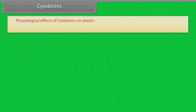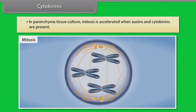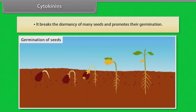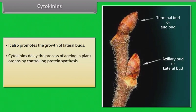Cytokinins. Physiological effects of cytokinins on plants. In the presence of auxins, cytokinins stimulate cell division even in non-meristematic tissues. In parenchyma tissue culture, mitosis is accelerated when auxins and cytokinins are present. It breaks the dormancy of many seeds and promotes their germination. It also promotes the growth of lateral buds. Cytokinins delay the process of aging in plant organs by controlling protein synthesis. It also helps in accumulation of salt in plant cells.